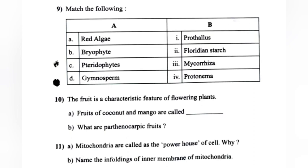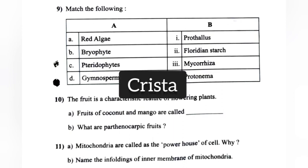Question 11: (A) Mitochondria are called the powerhouse of the cell. Why? Answer: They produce cellular energy in the form of ATP; hence they are called the powerhouse of the cell. (B) Name the infolding of the inner membrane of mitochondria. Answer: Cristae.